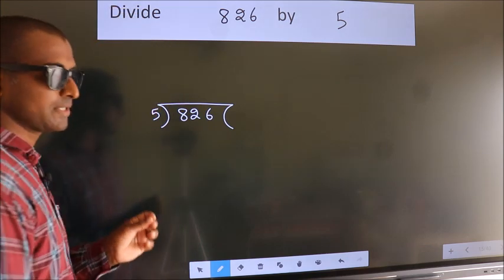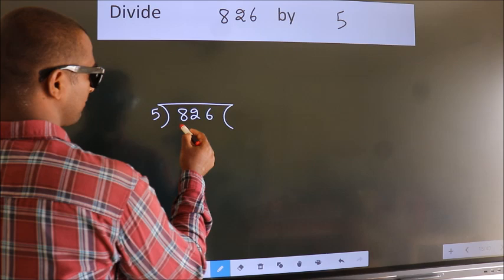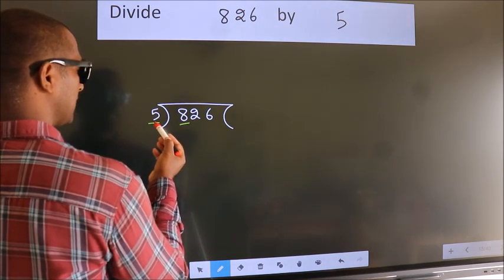This is your step 1. Next, here we have 8. 5. A number close to 8 in the 5 table is 5.